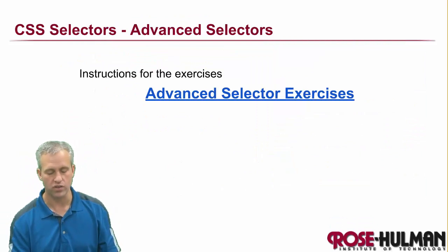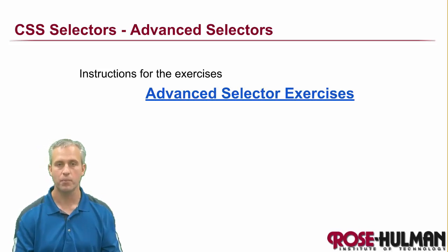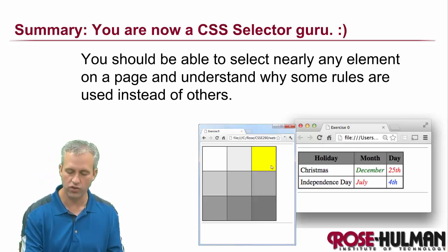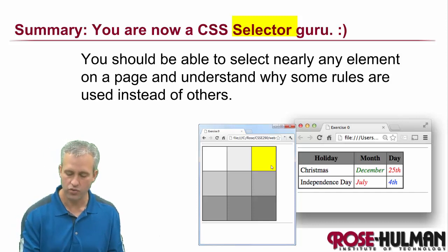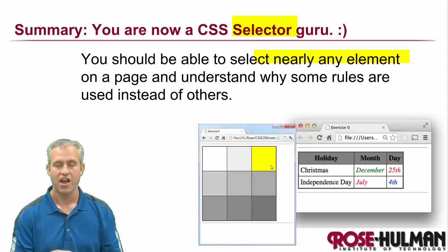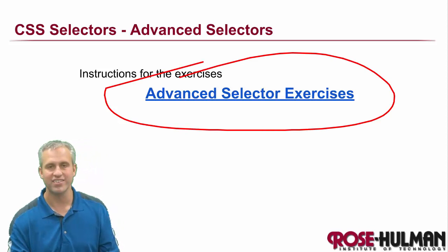The best way to learn things, though, is to go do some exercises. I don't need to walk you through this time, so go follow this link. Go work some exercises. If you get stuck, you can look at the solutions, but this will take you through some of the different advanced selectors. So by the time you finish that exercise, you should really be kind of a CSS selector guru. You're not necessarily a CSS guru yet, but you're definitely a CSS selector guru. And you should really be able to grab almost any element on the page and understand why some rules defeat others. All right. That's it for the CSS selectors unit. Go knock out that advanced selector exercises. Make sure you get it submitted, assuming you're taking this for a grade. I will see you next time.